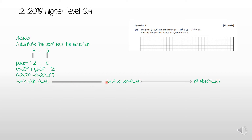Expanding the brackets: we have 16, then k × k = k², k × (−3) = −3k, (−3) × k = −3k, and (−3) × (−3) = 9, all equal to 65. Collecting like terms: k² − 6k + 25 = 65.